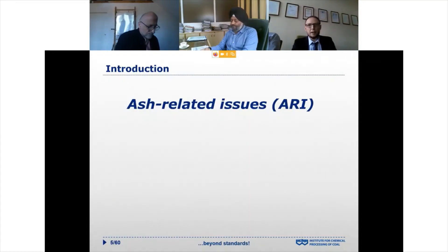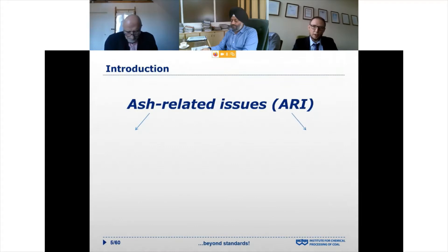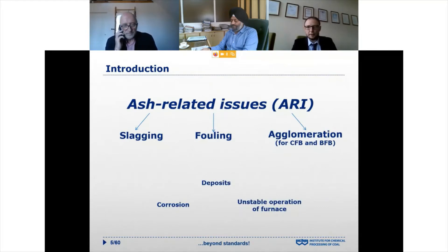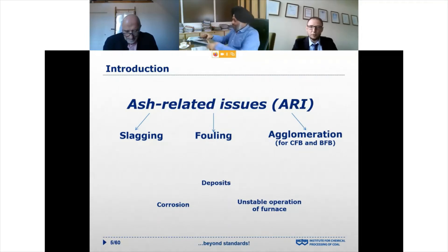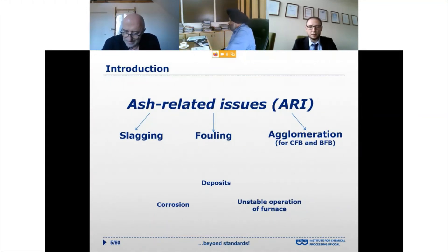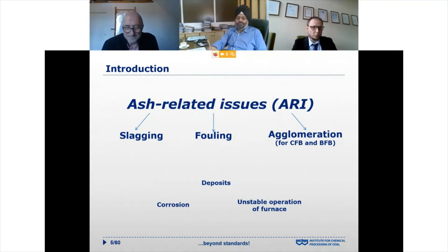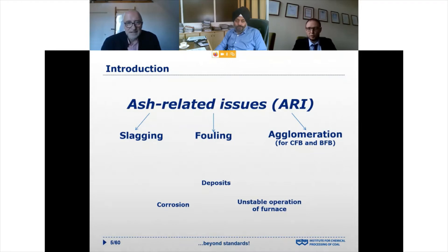In the beginning, regarding ash-related issues, these are the processes occurring in the boiler. We can distinguish three main processes: slagging, fouling, and agglomeration. Agglomeration occurs only in fluidized bed boilers, but slagging and fouling can also occur in other types of boilers, including pulverized and grate boilers. As a consequence of these processes, we can observe undesired corrosion, deposition, and unstable operation of the boiler furnace.